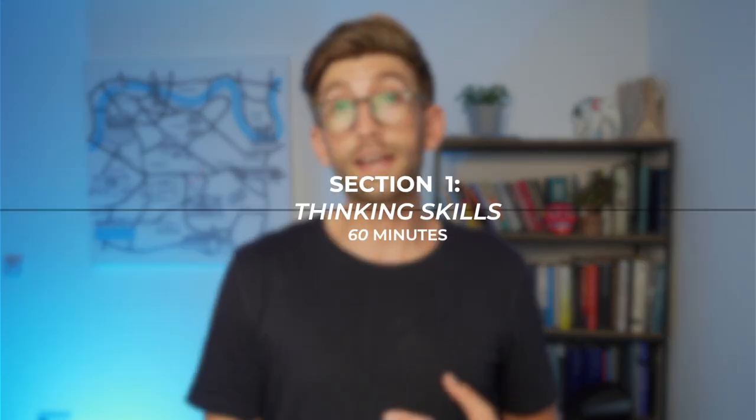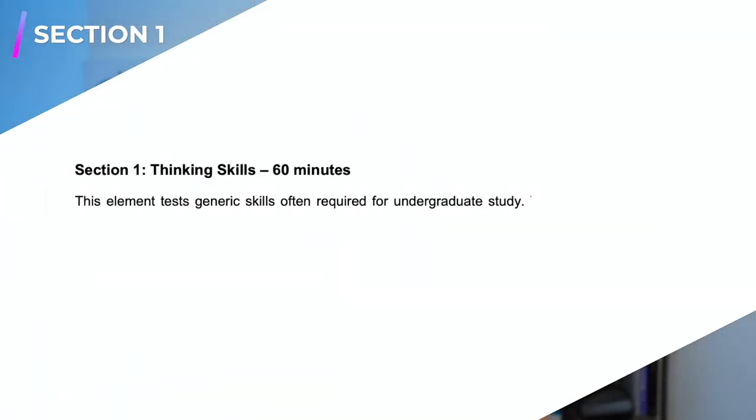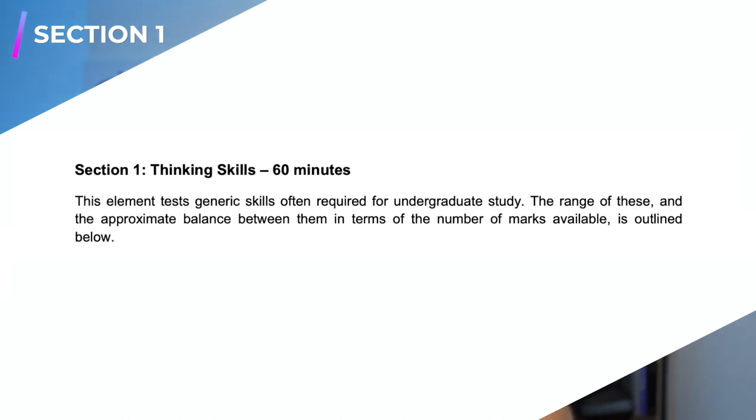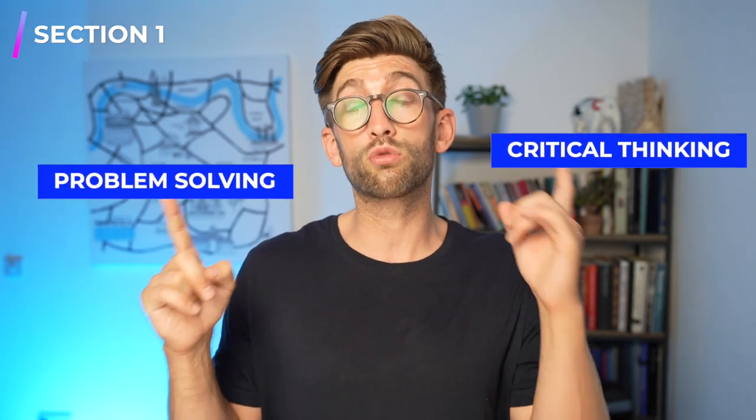Let's take a deeper dive into each section. Section one, Thinking Skills, makes up 50% of this entire exam. It tests generic skills often required for undergraduate study. Questions are in multiple choice format and importantly you are not allowed to use a calculator. The two elements of thinking skills are problem solving and critical thinking.